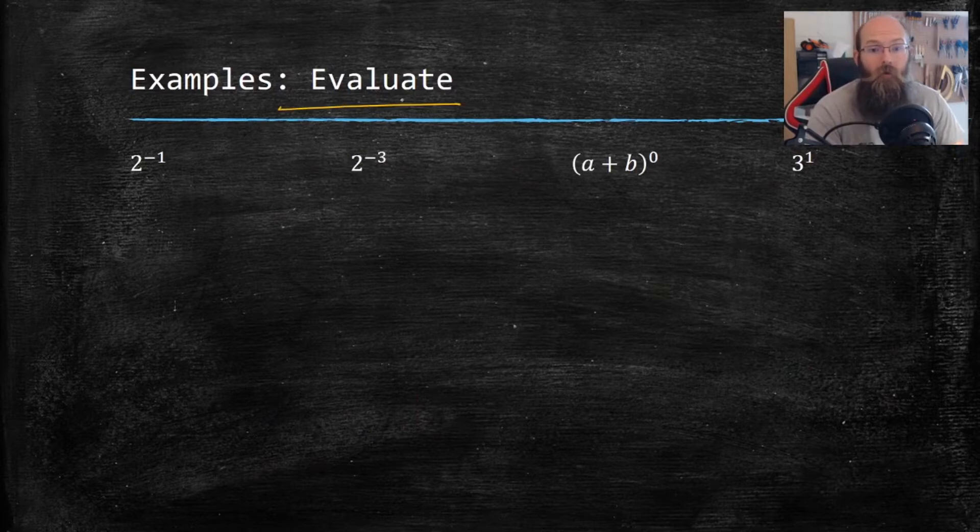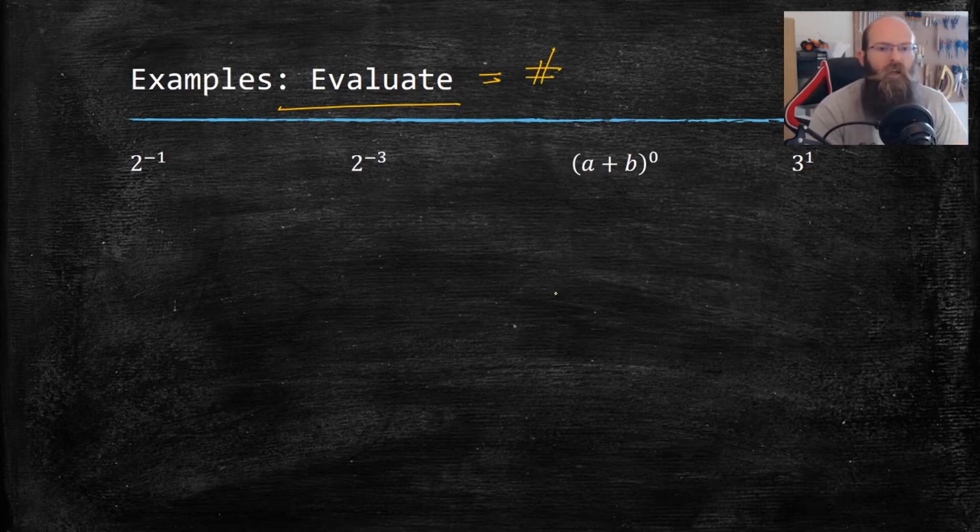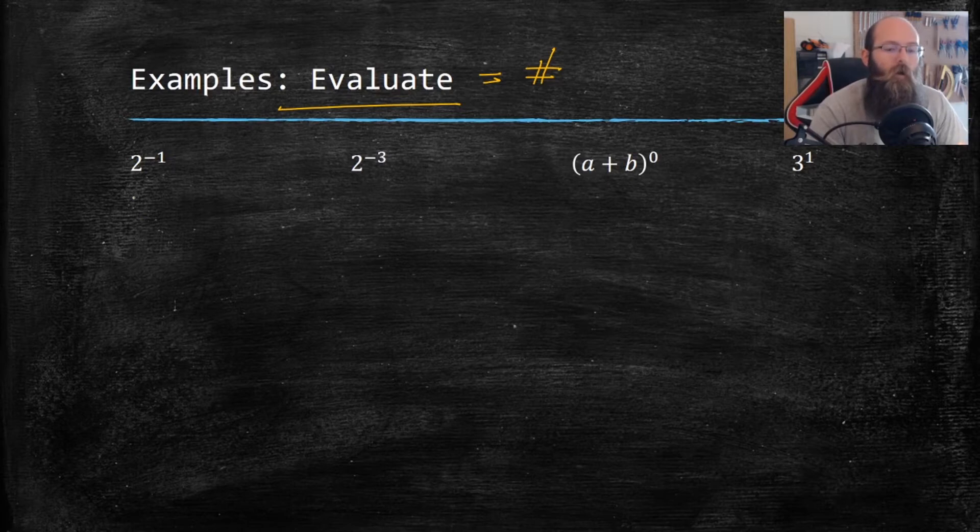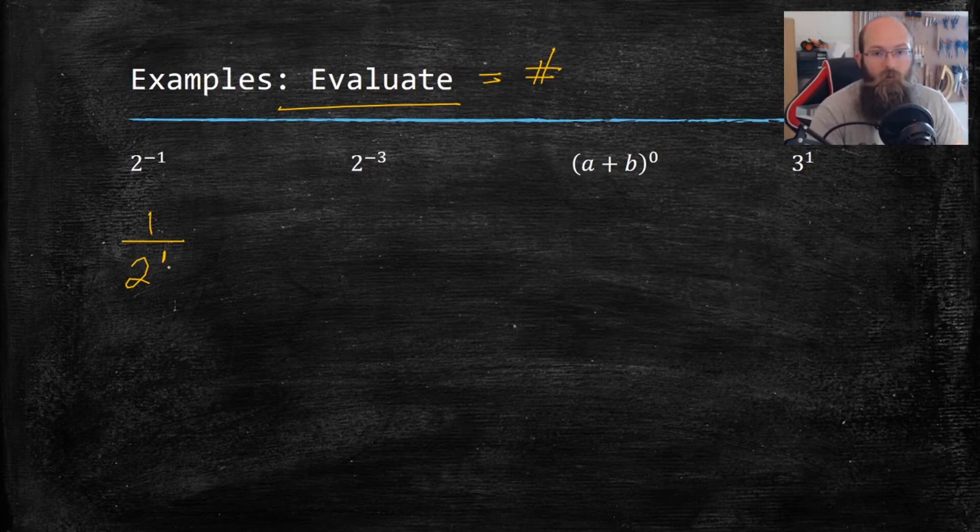So here, I need to evaluate. That means give me a number, what is this number? Evaluate is like solve, kind of, except there's sometimes not an equal sign. You just have to tell me what does this thing equal? If I were to simplify it, what do you get? Two to the negative one. Well, remember, that's like one over 2 to the positive one. And what is 2 to the first power? That's just one two times itself. So that's just one half.